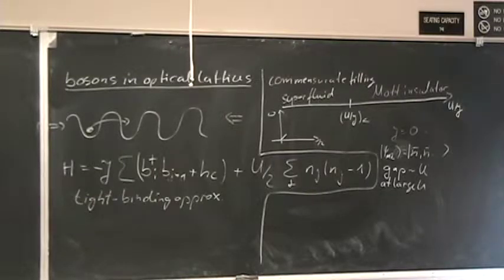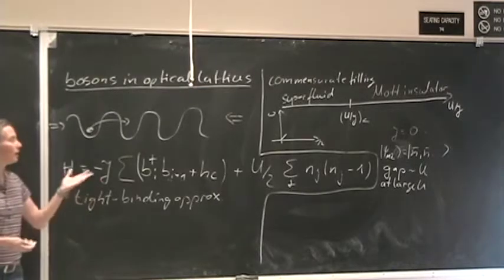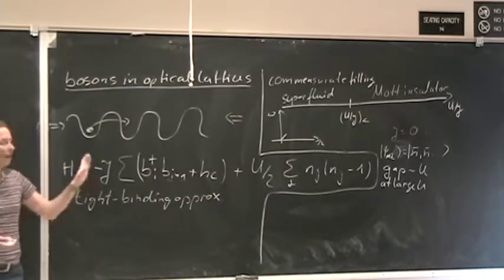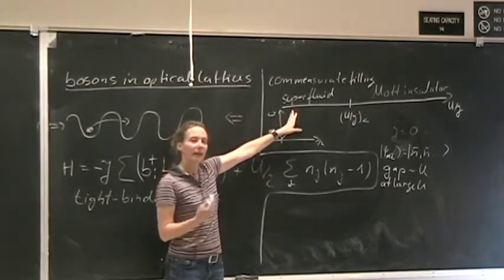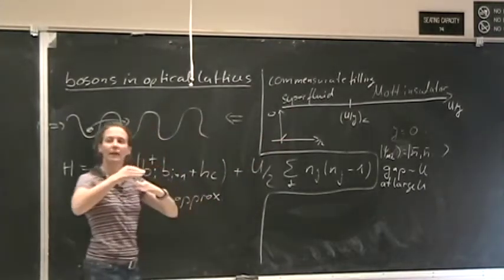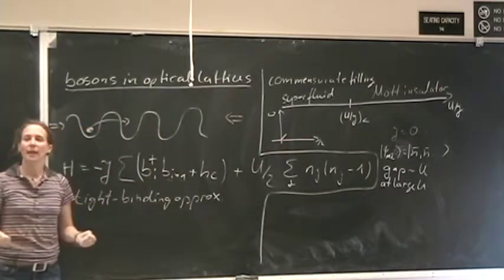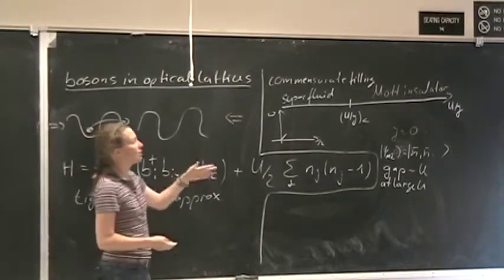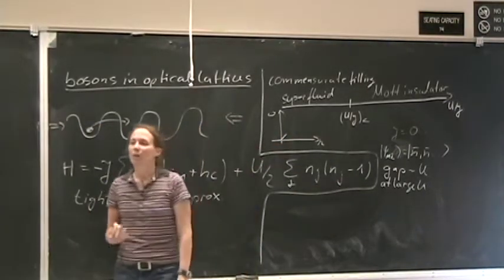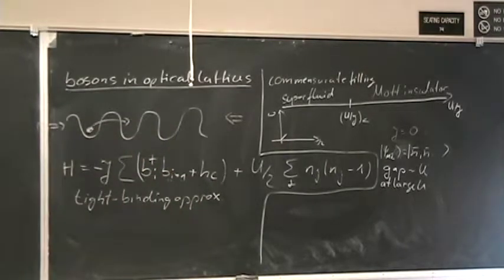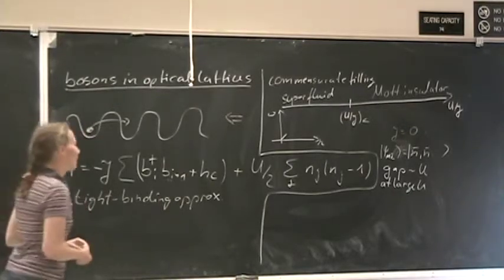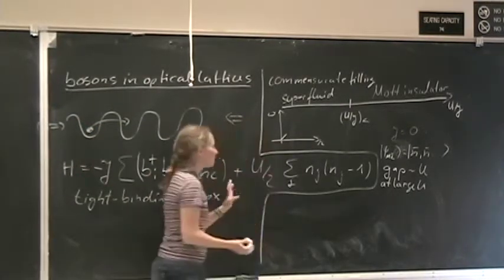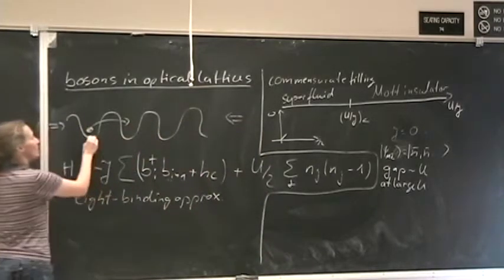The first cold-atom experiments in optical lattices observed this transition in 3D by monitoring the momentum pattern. By releasing the optical lattice and trap and taking absorption images, one approximately measures the momentum profile. In the superfluid, long-range coherence produces sharp interference peaks—analogous to Young's double-slit experiment with coherent matter waves diffracting on the lattice—whereas the Mott insulator shows a very broad background, indicating loss of coherence.